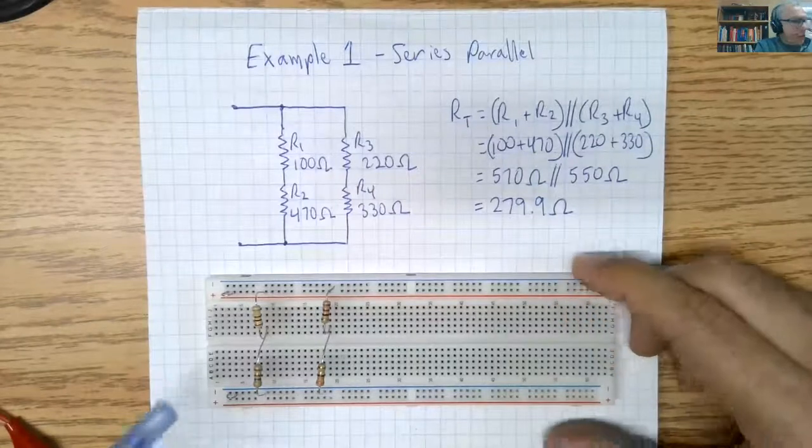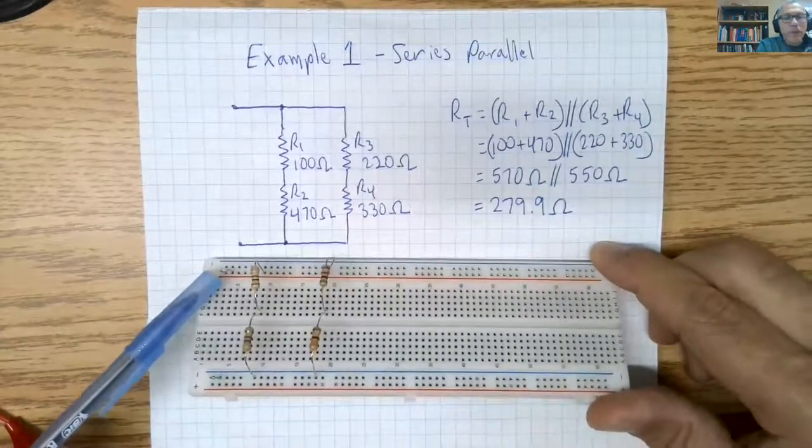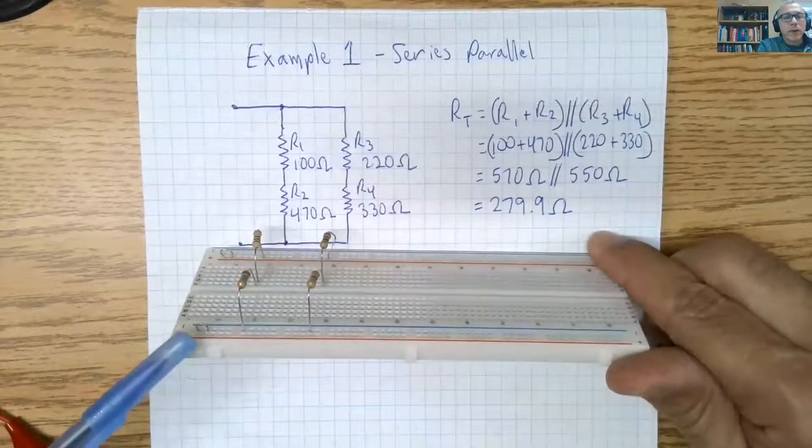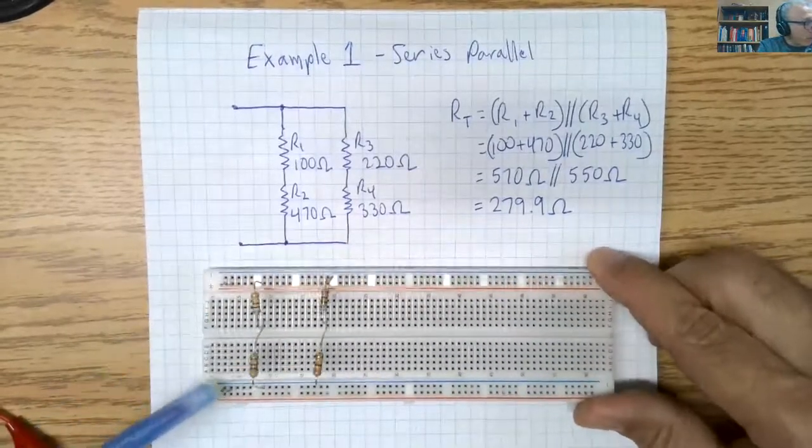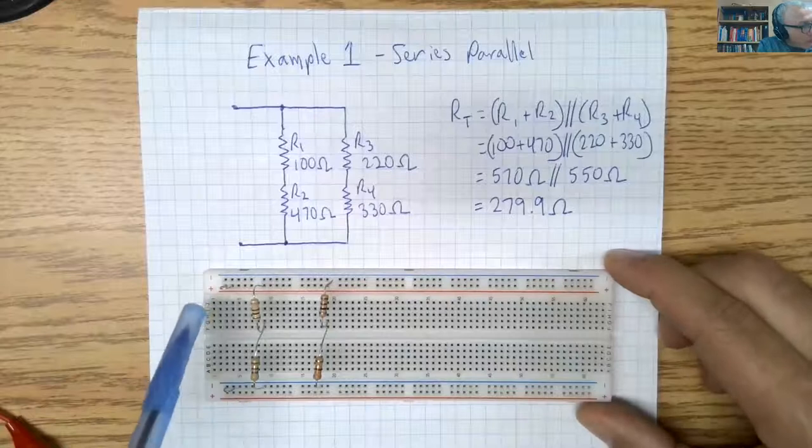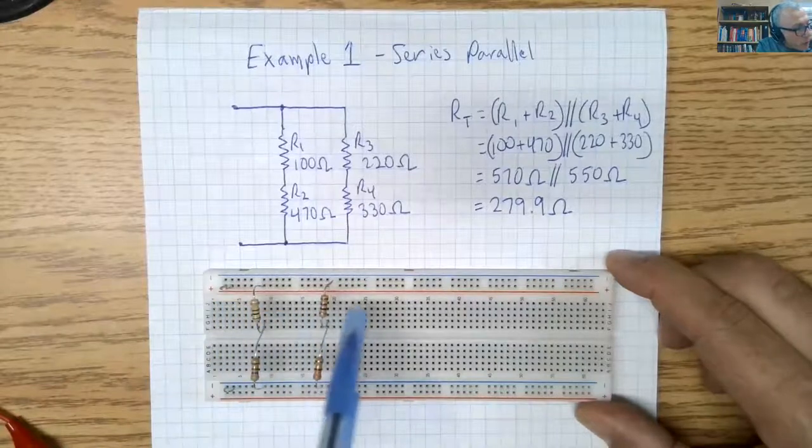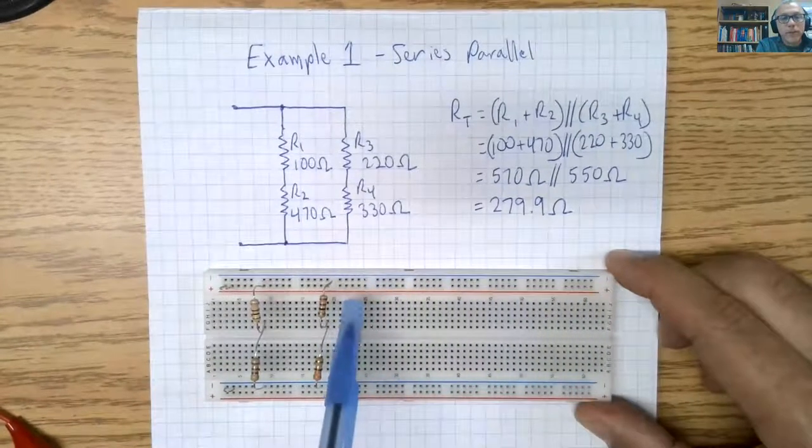So the way my breadboard is organized is I put just a little connecting terminal across the top rail and the bottom rail. And as you know, on breadboards, the rail going across the top are all connected.